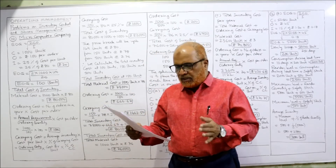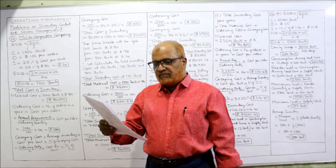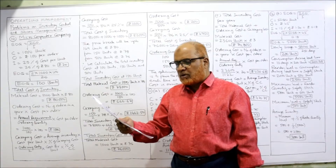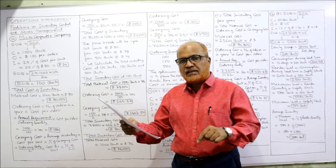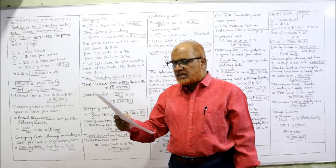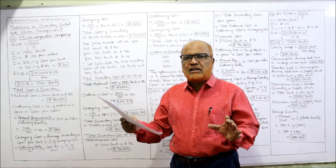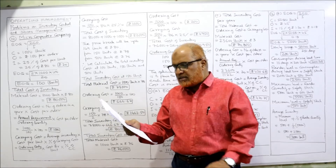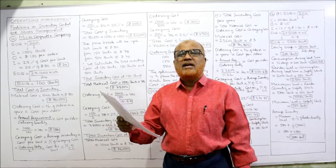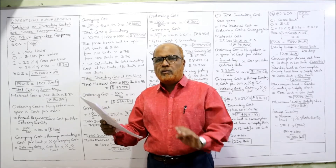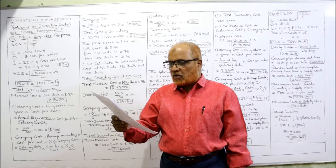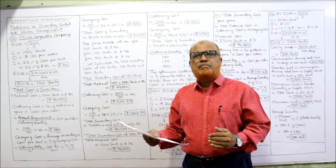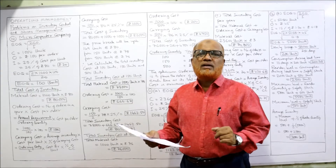The second part: if the supplier agrees for a discount schedule, discuss the optimum ordering policy. The quantity discount schedule is: up to 149 units — 80 rupees per unit; from 150 to 499 units — 78 rupees per unit; 500 or more units — 76 rupees per unit. But first, calculate the EOQ and total inventory cost.